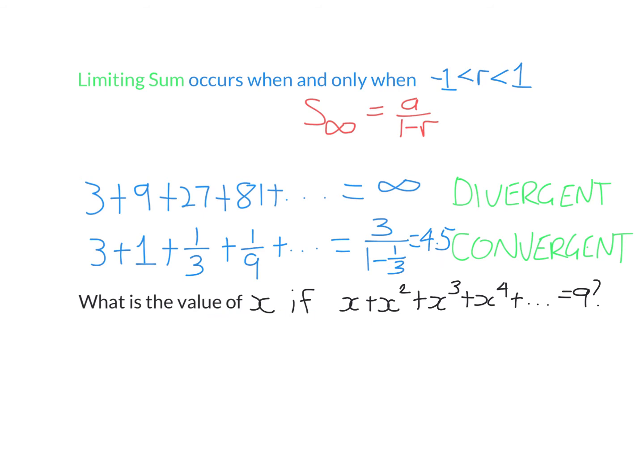Let's try this example here. What's the value of X if X plus X squared plus X cubed and so on equals 9? Here we have an infinite geometric series, infinitely many terms. It's a GP with A and R both equal to X. The first term's X, the common ratio is also X. Now, this will converge to 9 if and only if R is between minus 1 and 1. So we should get a value for X between minus 1 and 1, or we've done something wrong.